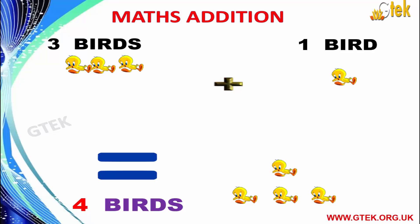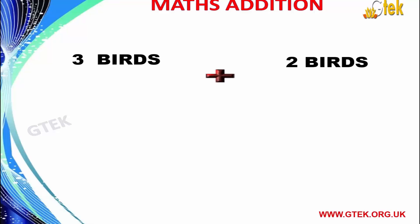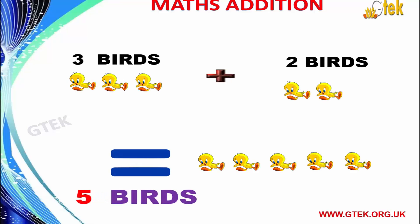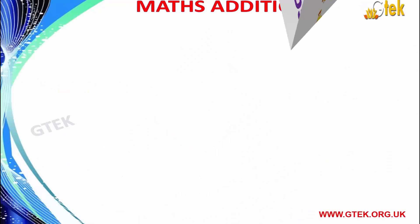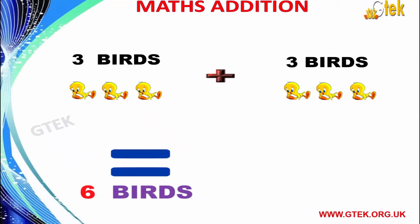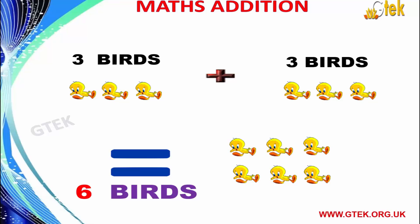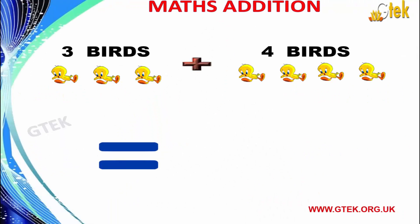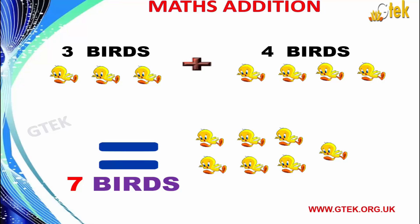3 birds plus 1 bird equals to 4 birds. 3 birds plus 2 birds equals to 5 birds. 3 birds plus 3 birds equals to 6 birds. 3 birds plus 4 birds equals to 7 birds.